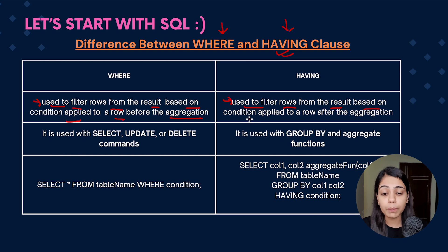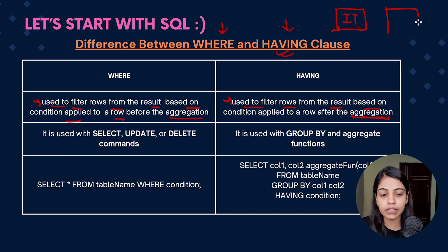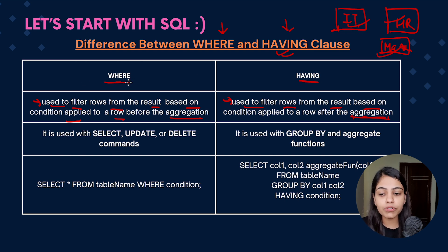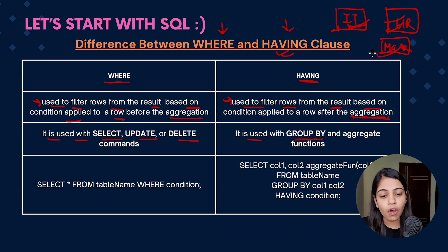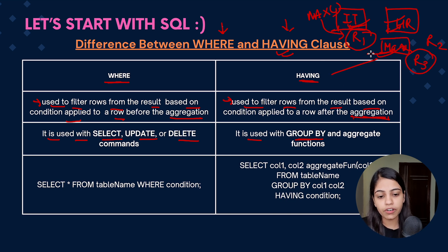The HAVING clause is a clause which is used to filter rows from the result based on a condition applied after aggregation. So whenever we have formed a group — such as a group of IT department people, HR department people, or marketing department people — and we want to provide a condition to filter out some data within those groups, we use the HAVING clause. WHERE is used before aggregate functions; HAVING is used with aggregate functions after groups are formed.